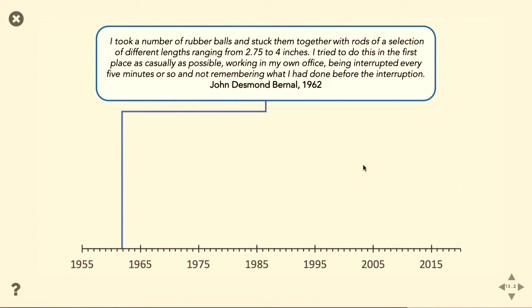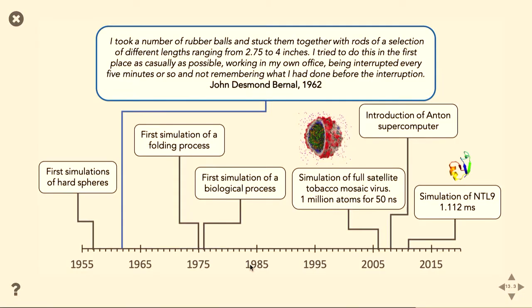All right. So before computational chemistry came along, what were people doing? Apparently, they were getting rubber balls and sticking them together with rods and trying to work out the physics, physically, in their office. And apparently getting interrupted by students a lot. This is interesting, because actually the first molecular dynamic simulation was done a few years before that, so maybe he didn't have to do that. But I guess we all choose our own hobbies.